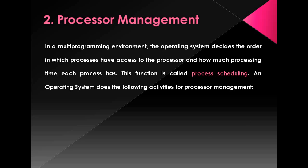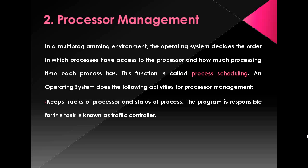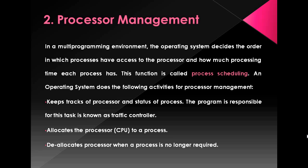The second function of the operating system is processor management. In a multi-programming environment, the operating system decides the order in which processes have access to the processor and how much processing time each process has. This function is called process scheduling. The operating system keeps track of the processor and status of each process; the program responsible for this task is known as the traffic controller.